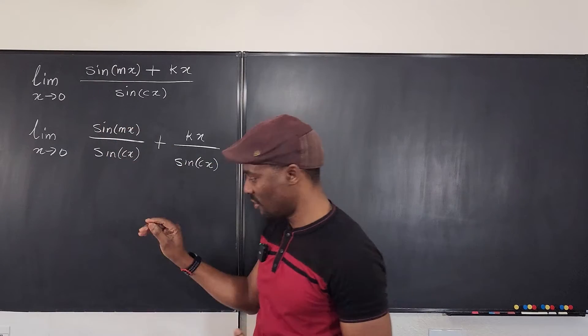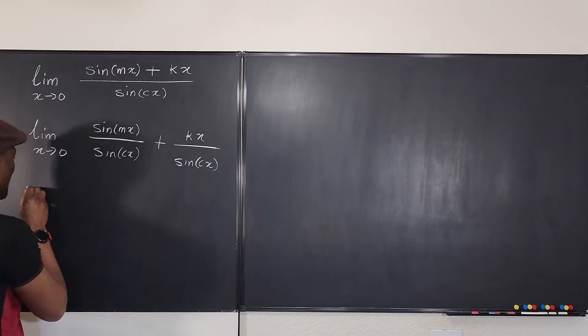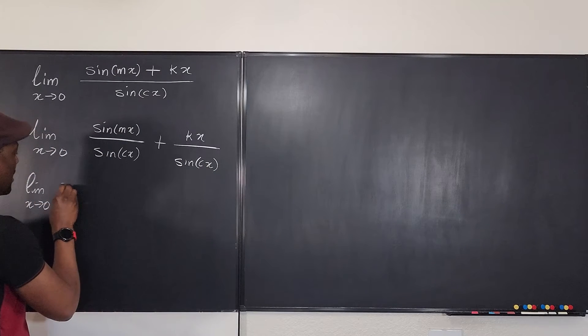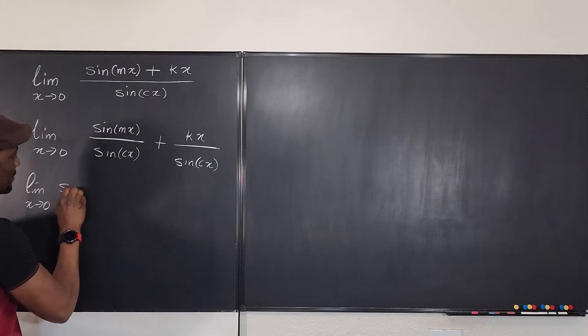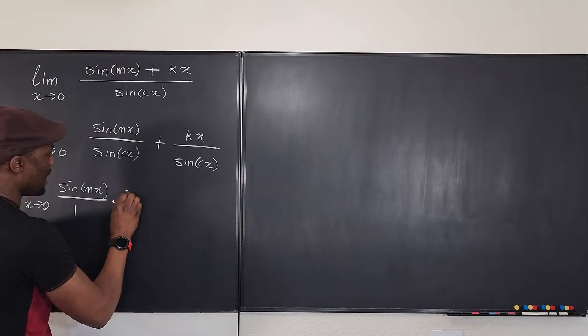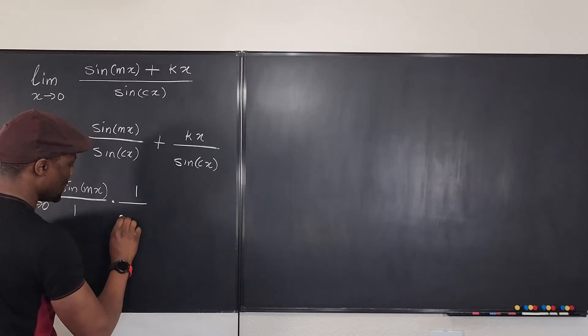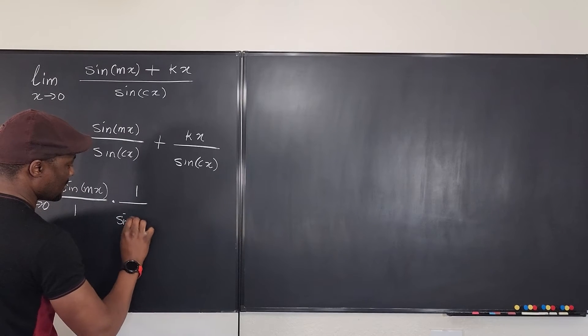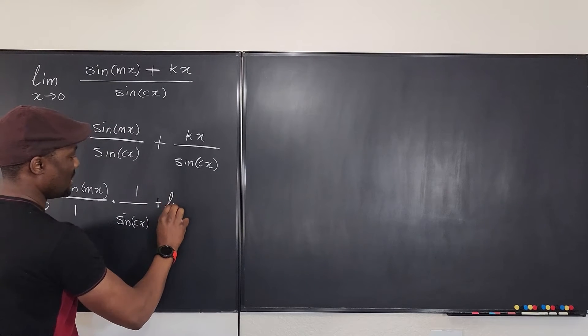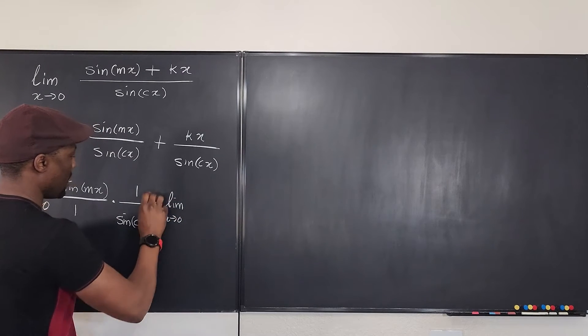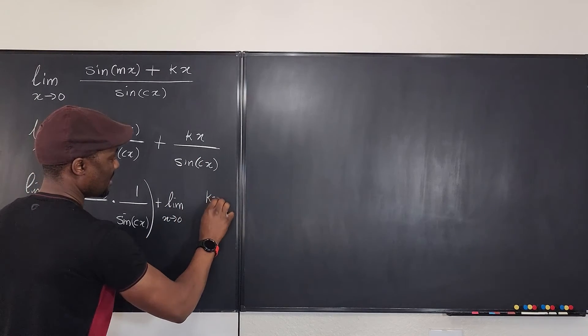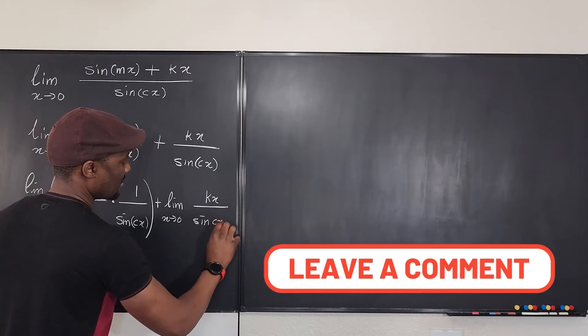Well, generally let's rewrite this. So you see what we have, we have the limit as x goes to zero. So I'm going to give the limits to each of these. I have sine mx over one multiplied by one over sine cx. And here I'm going to say it is plus the limit as x goes to zero of, so this is a single term, and I'm going to write this as kx over sine cx.